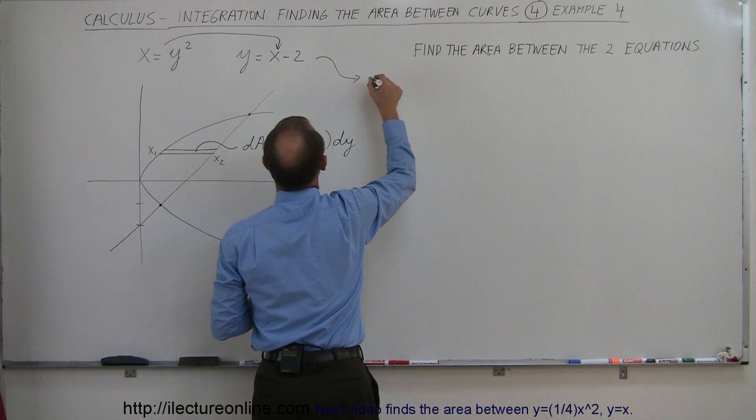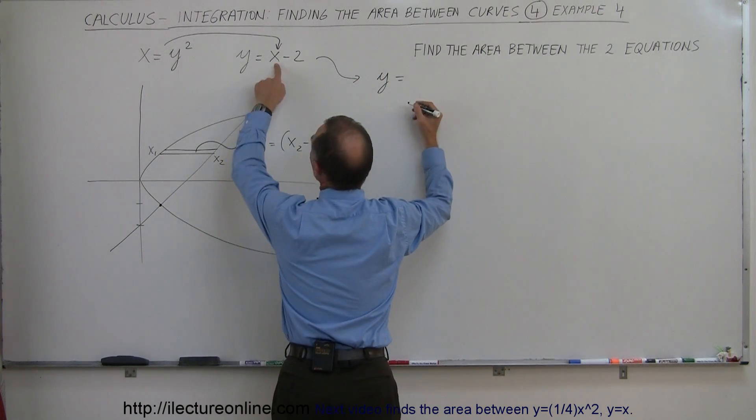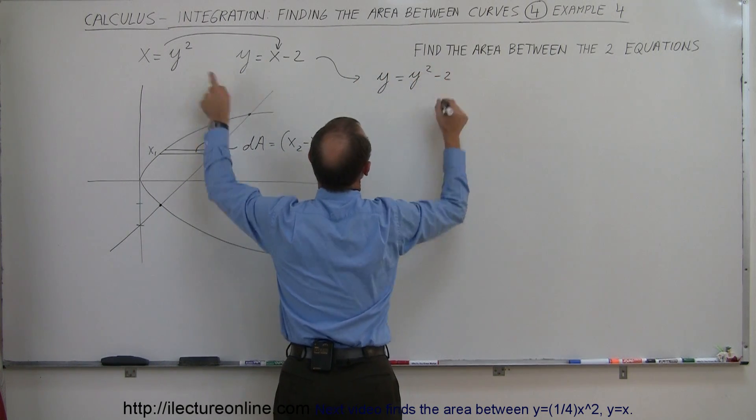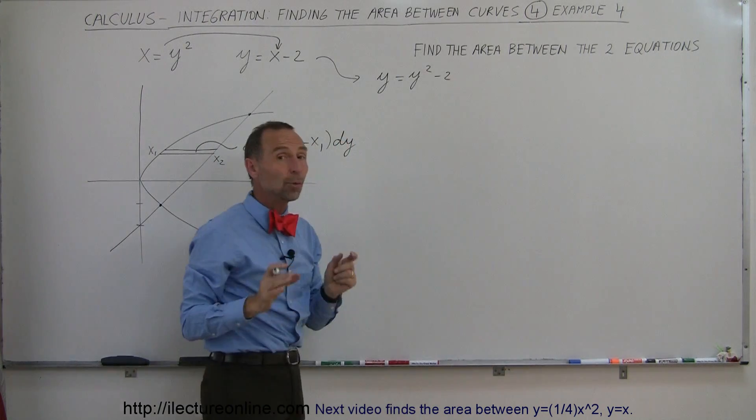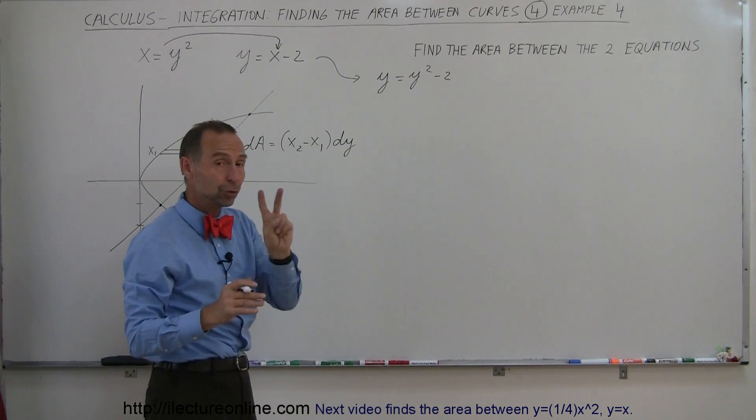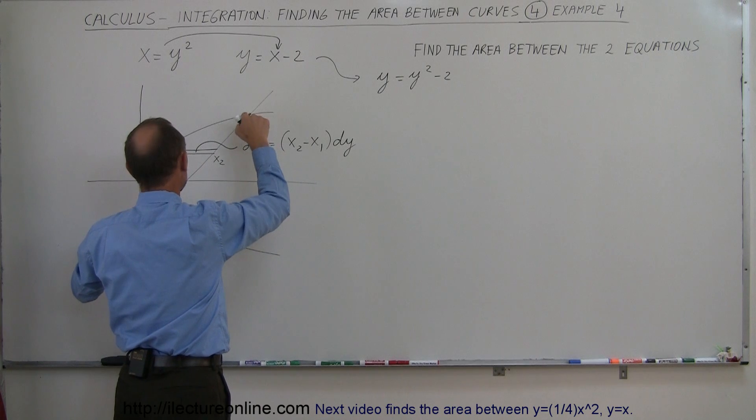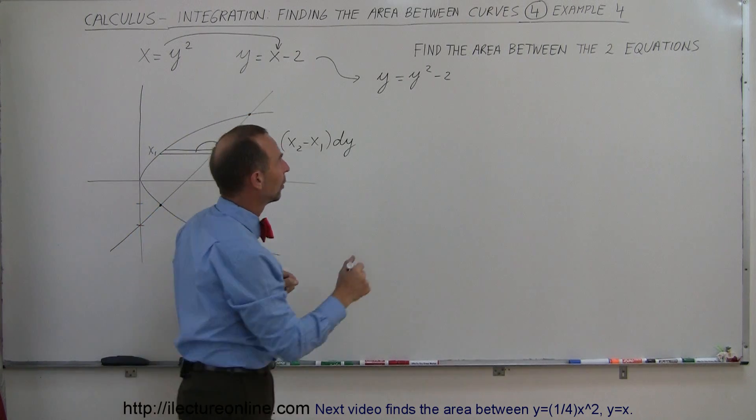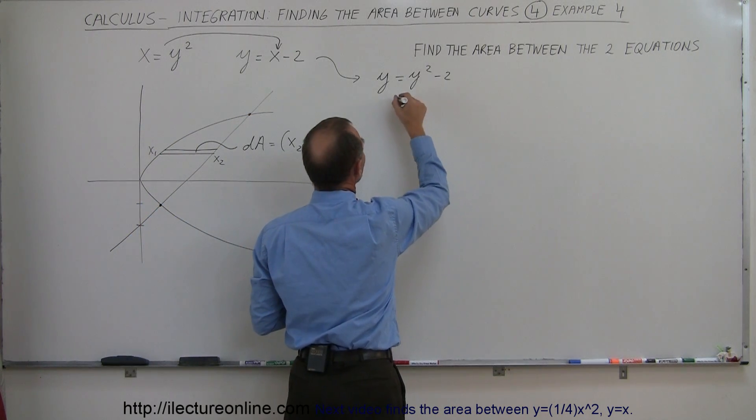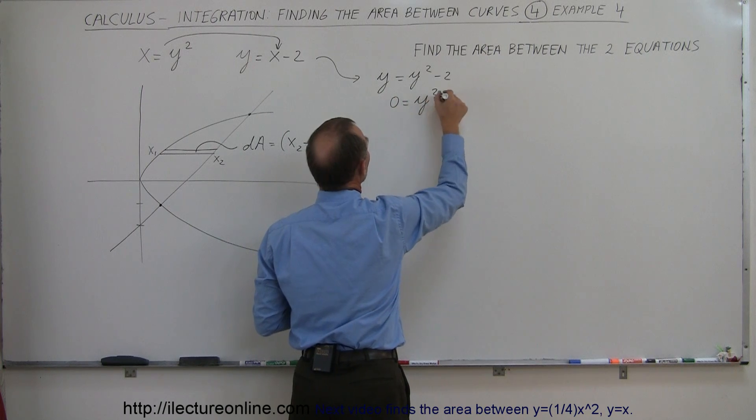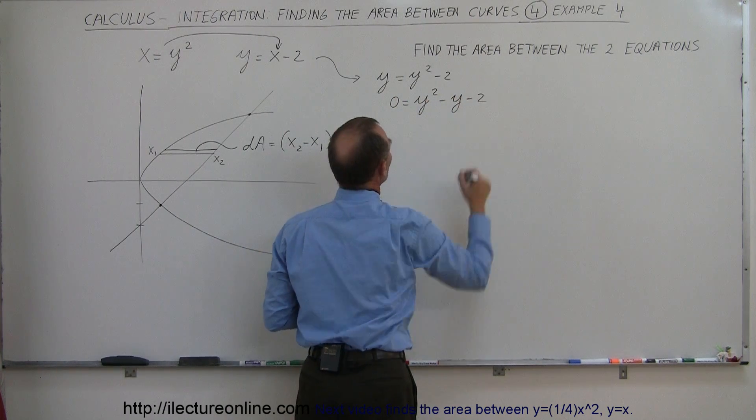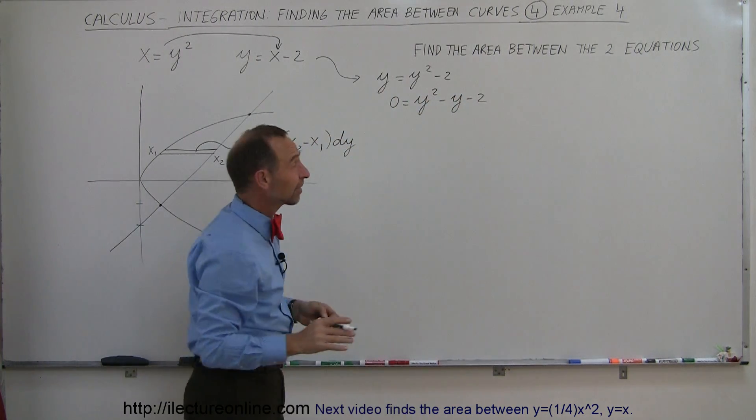So that means we get y is equal to, instead of x, I'm going to write y squared minus 2. That looks like a quadratic equation in y, so let's solve that, and I'll have two roots. Those two roots will give me the two y values of those two points. So when I move everything over to one side, I get 0 is equal to y squared minus y minus 2, and that looks like we can factor that.